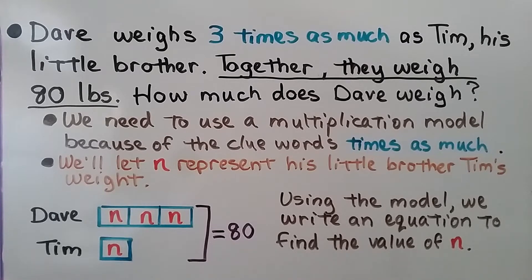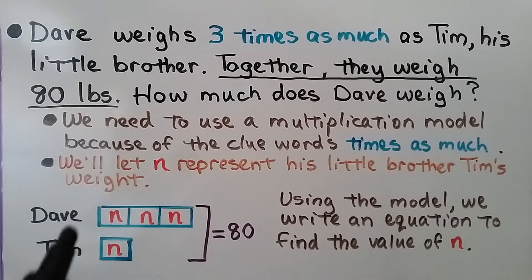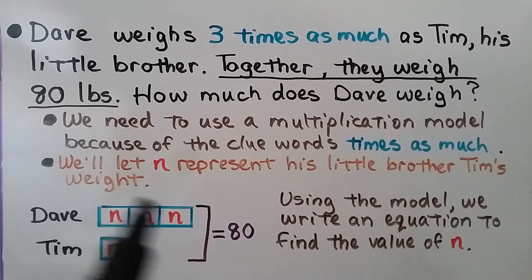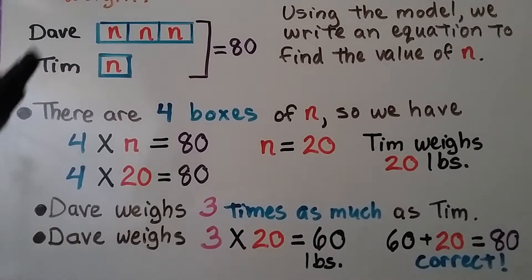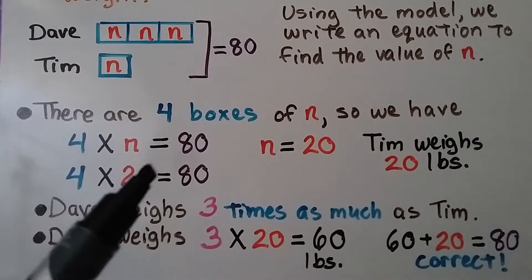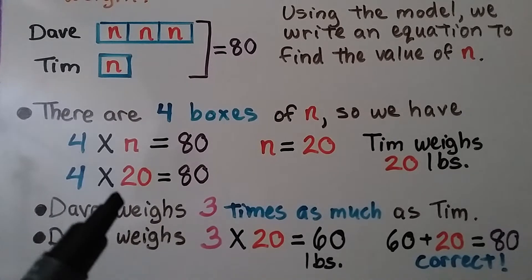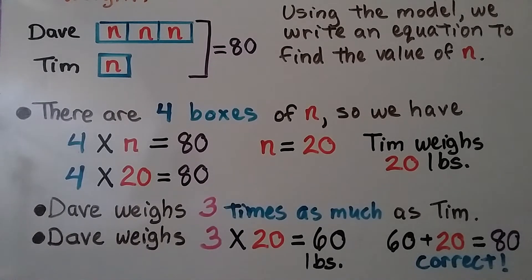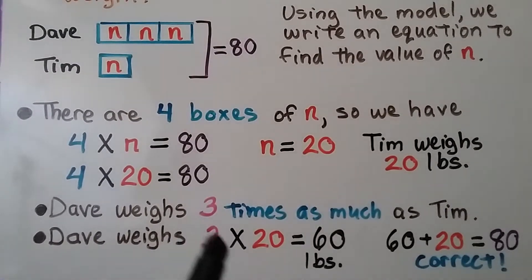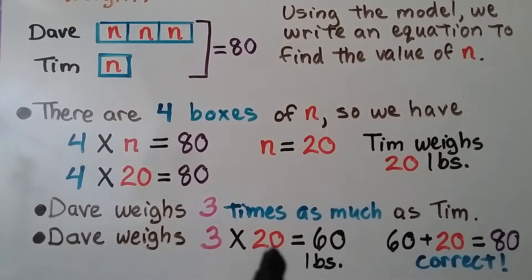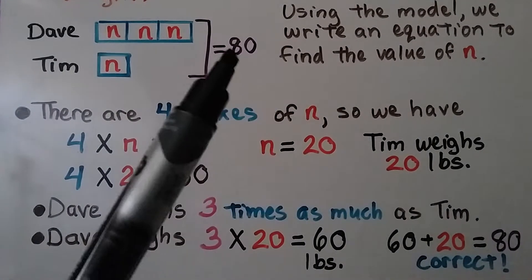Using the model, we write an equation to find the value of n. Because Dave is three times as much, Dave has three boxes and Tim is just n. Together all of these boxes equal 80. There are four boxes of n, so four times n equals 80. Four times 20 is 80, so n equals 20 — Tim weighs 20 pounds. But we need Dave's weight: Dave weighs three times 20, which is 60 pounds. And 60 plus 20 equals 80, confirming our answer.